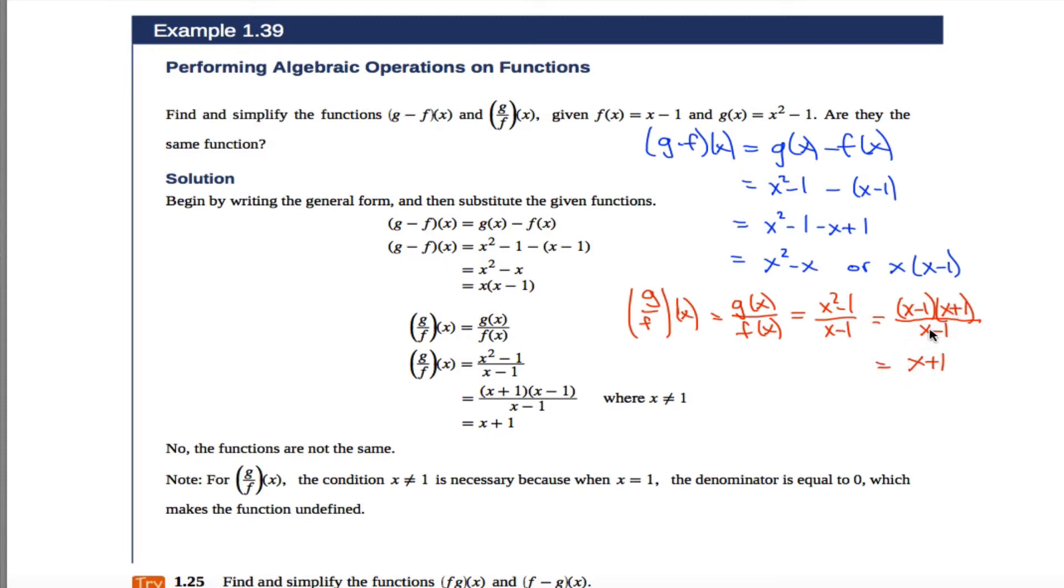A couple things to be careful of. Really, they only cancel if x does not equal 1. So really, this isn't equal to this. You should be a little bit careful. But most teachers will let you get away with writing this equals this. But just know the domain is a little bit restricted. The question asked me, are they the same function? They're not the same function because this does not equal this. So before you even go back and consider the domains, I can immediately see that they're not the same function.